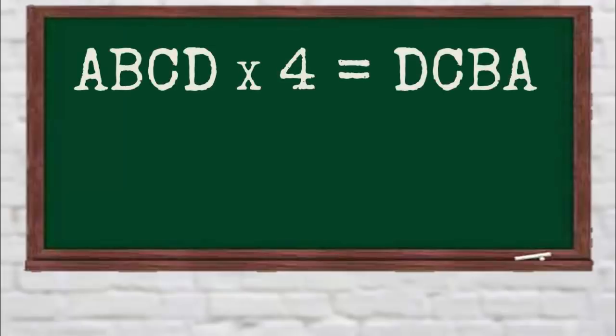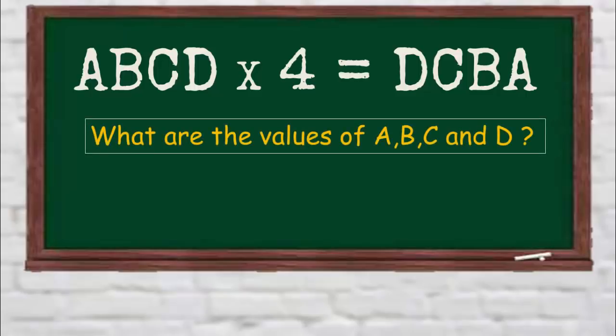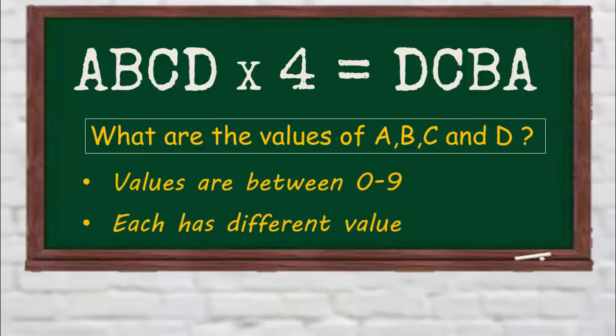A number ABCD when multiplied by 4 gives a result of BCBA. Can you find the values of A, B, C, and D? The values are between 0 to 9 and each letter has a different value. Pause the video and think logically.